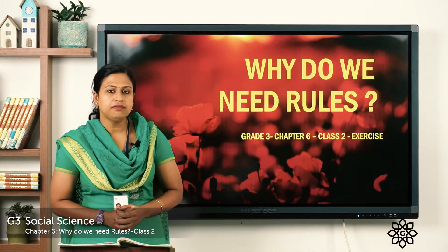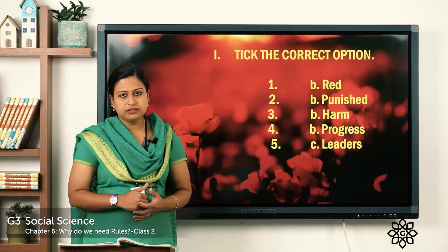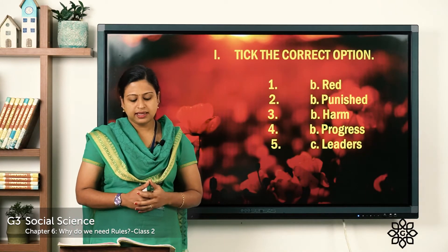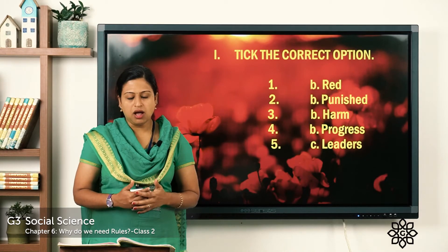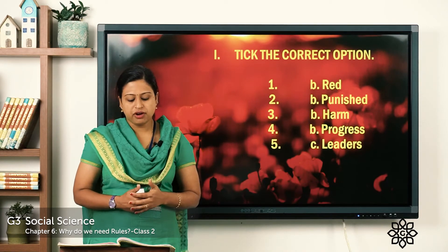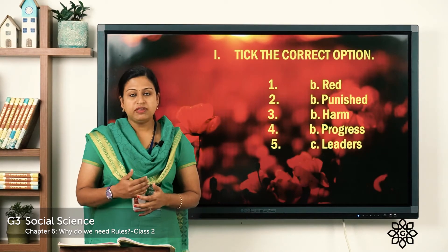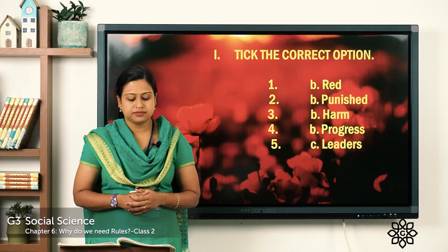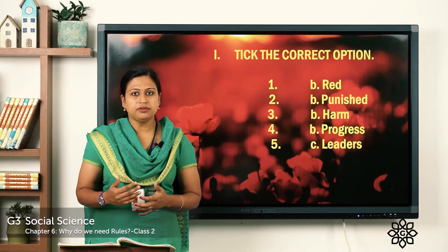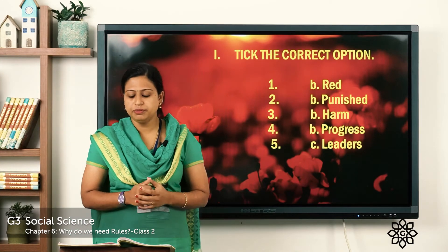I hope you all have marked the correct option. Now let's check the answers. The first one: we must cross the road when the traffic light is red. Second, when we break a rule we are punished. Third, laws protect us from harm. Fourth, by following laws we help our country to progress. Fifth, people who make rules for the country are called leaders. You have to write all these exercises in your notebook with the proper date.